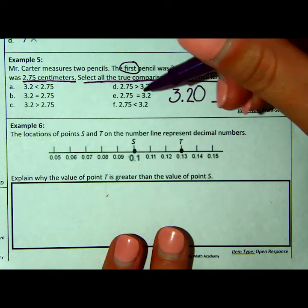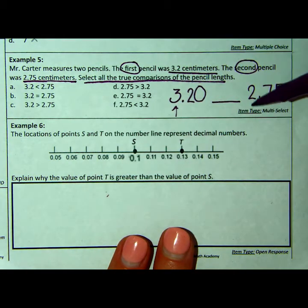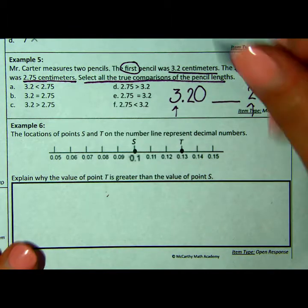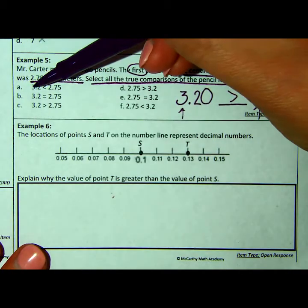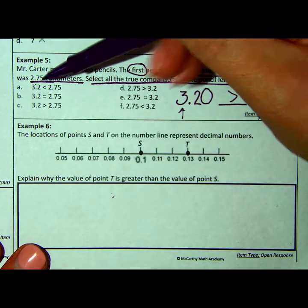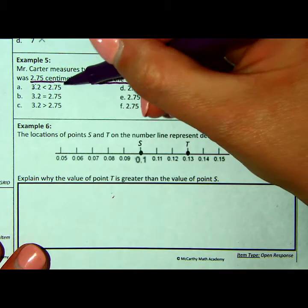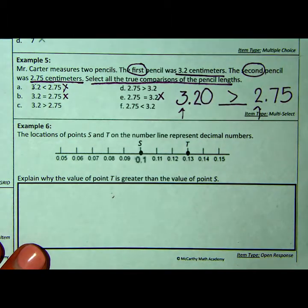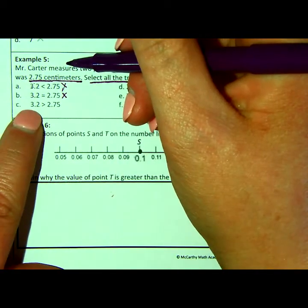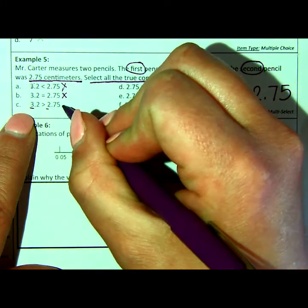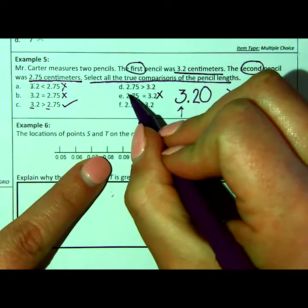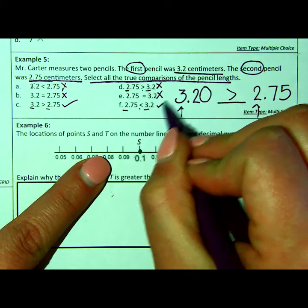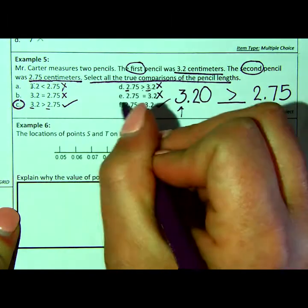So let's see here. Well, right away, we can look at the whole numbers, can't we? 3 and 2. So let's look. We know that this number is greater than, so is 3.2 less than 2.75? No, because 3 is bigger than 2. So that's wrong. Are they equal? No. I see another one where they're equal. No. Now let's look at this. 3 is greater than 2? Yes. Let's look at this one. 2 is greater than 3? No. 2 is less than 3. Yes. So the two correct answers were C and F.